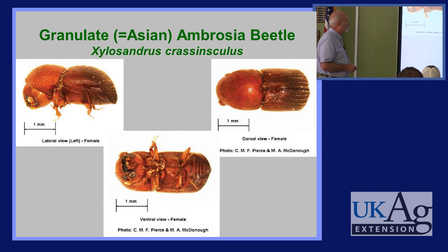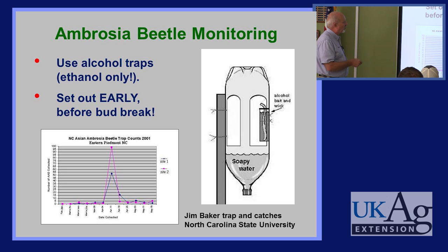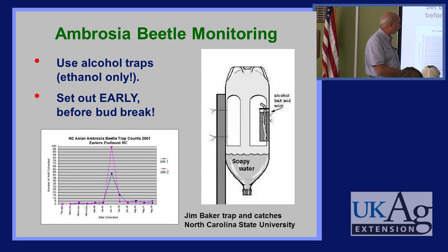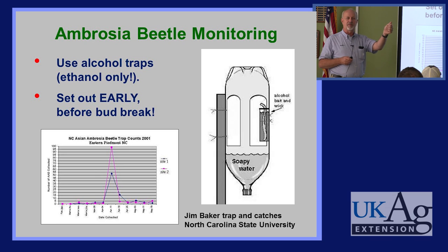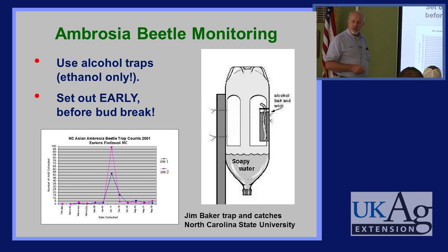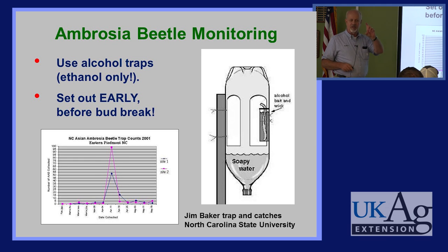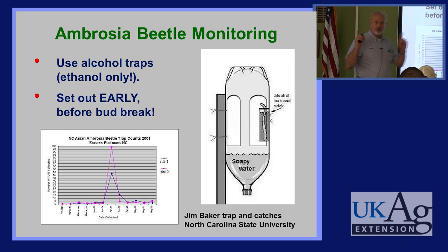For preventive monitoring of ambrosia beetles, you need to know your critter. If you've experienced these beetles, monitor for them. It's easy — all on the internet. You can use a two-liter plastic bottle cut in various designs. Get a little snap-cap pill vial, cut a hole in it, get a dental wick from your dentist, and use ethyl alcohol as the lure.